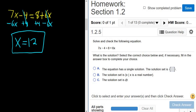We could check our answer. To check our answer, we would plug it back into the original. So the original equation was 7x minus 4 equals 8 plus 6x.